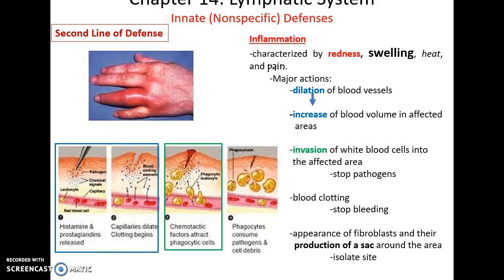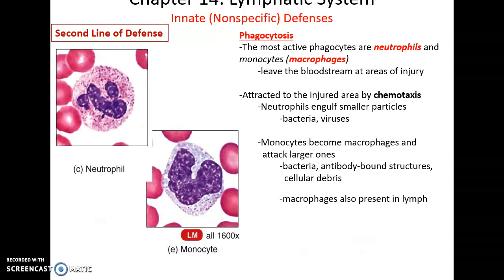Inflammation is characterized by redness, swelling, heat, and pain. When there is an injury, the area becomes inflamed because pathogens may enter through it. Blood vessels dilate, increasing blood flow and volume in that area, causing swelling, redness, heat, and pain. White blood cells enter to attack pathogens and clean up cell debris, blood clotting stops blood loss, and fibroblasts may arrive to produce a connective tissue structure around the infection site to isolate it. Phagocytosis involves neutrophils and macrophages engulfing pathogens, antibody-bound viruses, and cell debris.